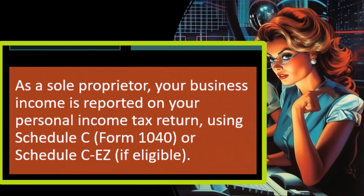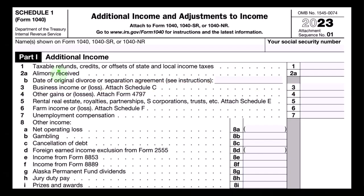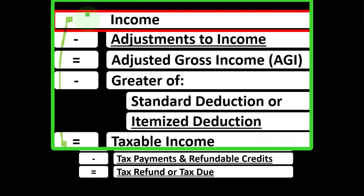A sole proprietor's business income is reported on your personal income tax return using Schedule C of Form 1040. The Schedule C is basically an income statement in and of itself. This gets confusing because the formula for the income tax equation is basically a modified income statement — income line items minus deductions — but one of the lines feeding into that top income line is actually coming from another statement.